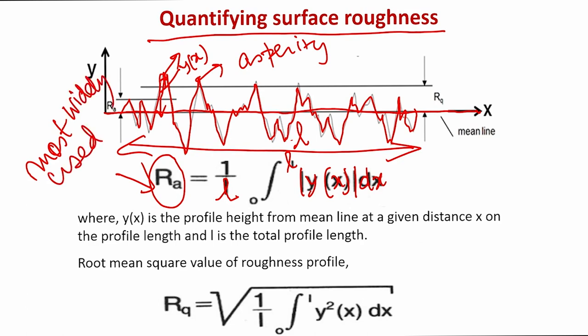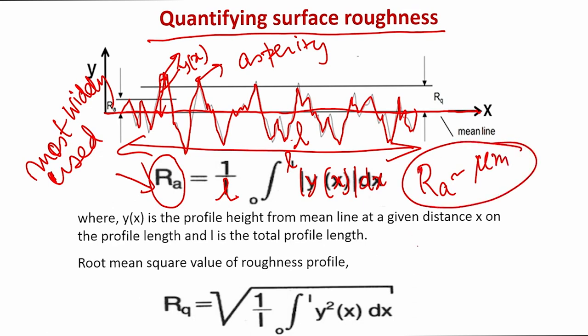Average surface roughness is by far the most widely used parameter. Anytime people talk about a machined surface, the first thing they ask is the Ra value. Typically Ra values of various surfaces are on the length scale of some micrometers. If the Ra value goes to millimeters, that is an extremely rough surface and is not acceptable in most industrial applications — Ra values must be in the order of micrometer scale.